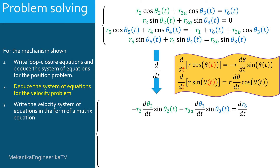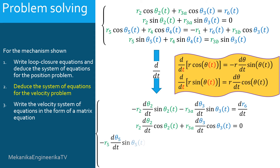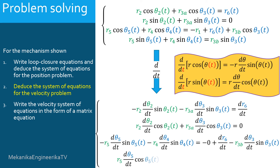The second equation yields: R2 d theta 2 over dt times cosine theta 2, plus R3A d theta 3 over dt times cosine theta 3, equals 0. When we differentiate the third equation with respect to time, we obtain: minus R5 d theta 5 over dt sine theta 5, minus R4 d theta 4 over dt sine theta 4, equals minus DR6 over dt, plus R3B d theta 3 over dt sine theta 3. And the fourth equation gives: R5 d theta 5 over dt cosine theta 5, plus R4 d theta 4 over dt cosine theta 4, equals R3B d theta 3 over dt cosine theta 3.